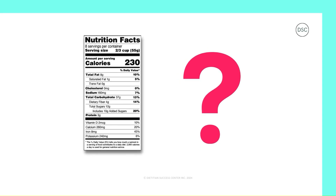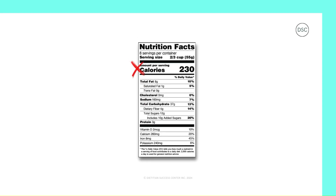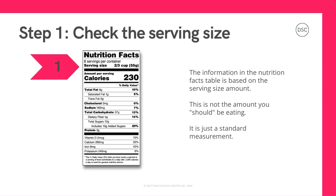If you've looked at the nutrition facts table before, which value do you tend to look at first? Lots of people will say calories, but there's actually a step that goes before this. This brings us to step number one, which is to check the serving size. The serving size is the number at the top of the table. The serving size does not tell you the amount you should be eating. It is just a standard amount that food companies use, but it's important because all of the information that follows in the table is based on this amount.